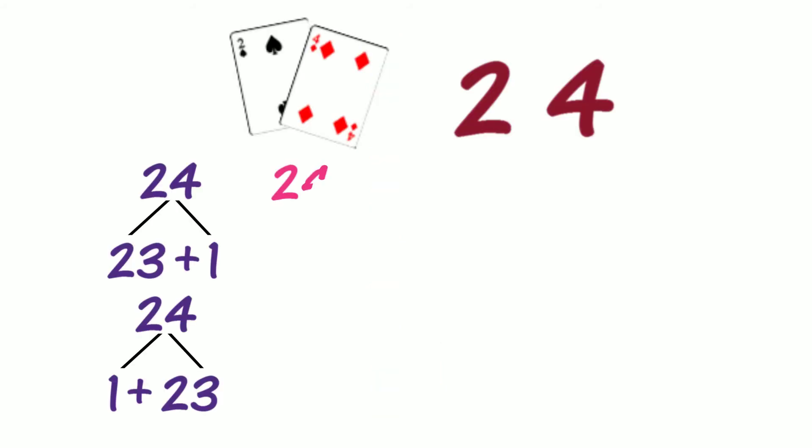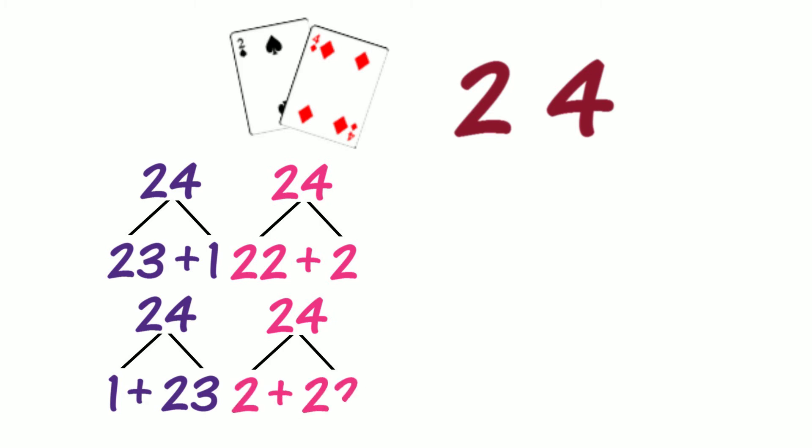Let's put the tower of 24 blocks back together again. How else could we partition this tower of 24 blocks into two parts? Could we partition into 22 and 2? Let's record our partition. If we swap the places of the parts, what other partition do we know? Do we know 2 and 22? Is this the same partition?